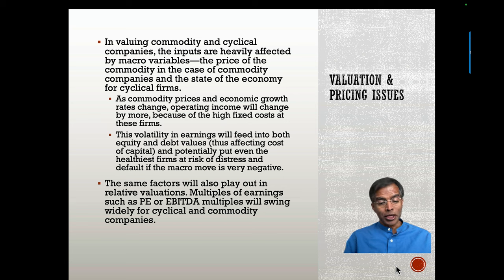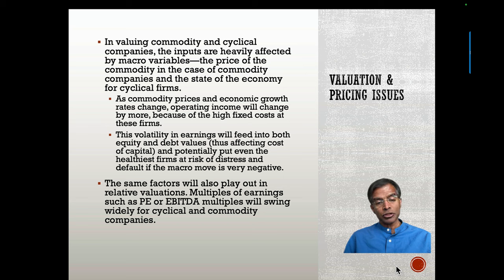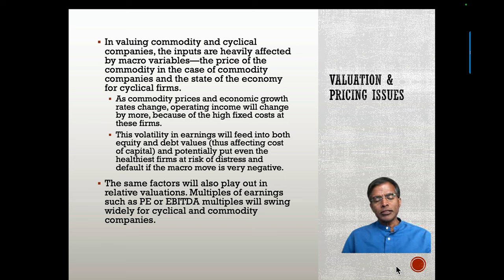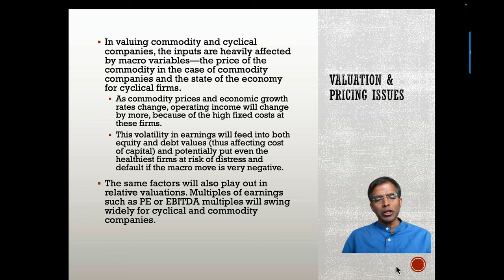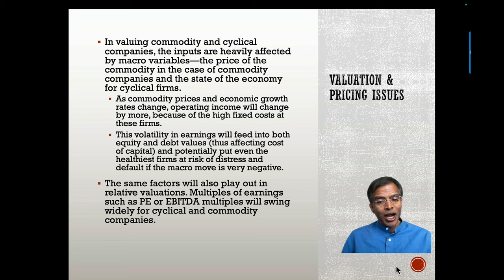Your company can go from incredibly safe to on the verge of bankruptcy over the course of a year because oil prices went from $100 to $35 a barrel. The same thing shows up in pricing. When you look at commodity and cyclical companies, they look cheapest at the peak of the oil price — and markets are not being crazy. When oil prices peak, they're pricing in the expectation that oil prices will come down. The multiples will be highest at the very bottom of the cycle, because markets assume normalization.